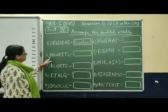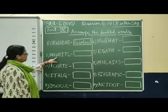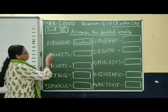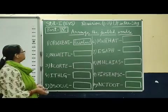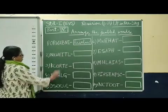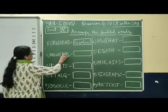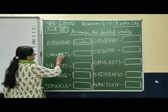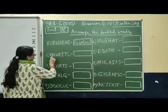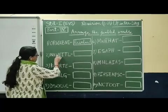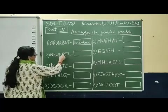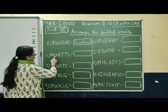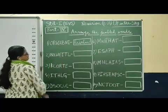Now, what is this? N, A, W, E, I, T, L. Which spelling can be formed with this jumble form? See here: T, W, I, N, K, L, E. Once again — T, W, I, N, K, L, E. Twinkle.